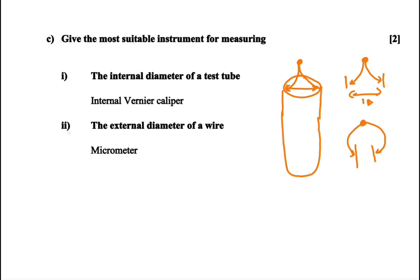Then we have number ii: measuring the external diameter of a wire. So the test tube is different from a wire. The test tube was bigger, and this one is very small. So if it is very small, we will make use of a micrometer. One can say the instrument here is the external vernier caliper, but because the diameter of the wire is very small, we make use of a micrometer such that we have a degree of accuracy in getting more precise than using an instrument that gives us a reading but that reading would not have the degree of accuracy that is very precise.